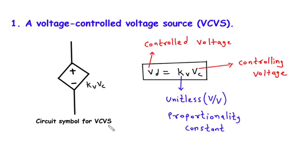One common application is in amplifiers. By using a VCVS, we can control the amplification of signals based on the controlling voltage. This allows us to adjust the volume or gain of the amplifier according to our needs.